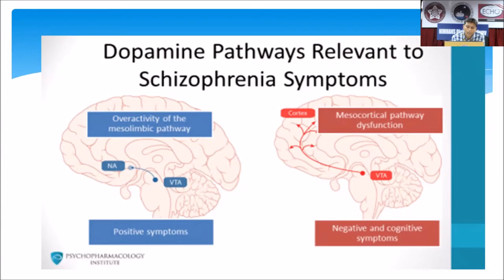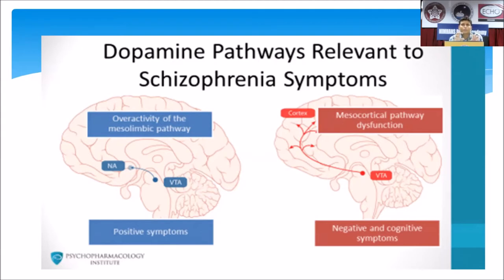There is also one more dopamine pathway from the ventral segmental area to the cortex, called the mesocortical pathway. There is decreased dopamine activity in this pathway, which gives rise to the negative symptoms and cognitive symptoms of schizophrenia — that's why patients have a lot of negative symptoms. An ideal antipsychotic should decrease the dopamine activity in the mesolimbic pathway and increase the dopamine activity in the mesocortical pathway, thereby improving both positive and negative symptoms.